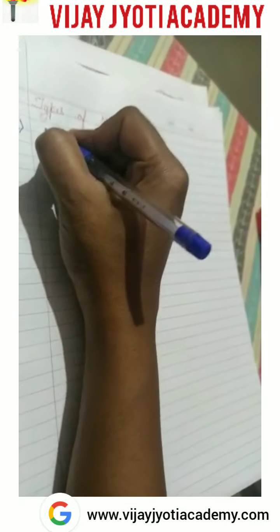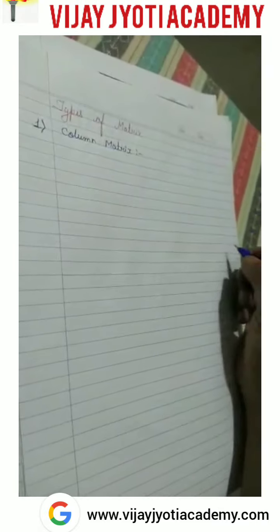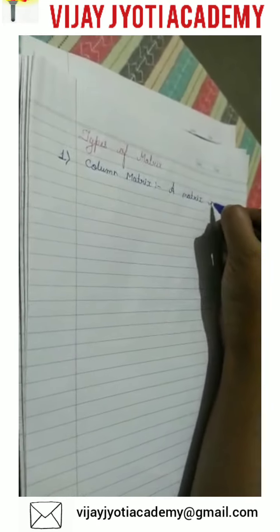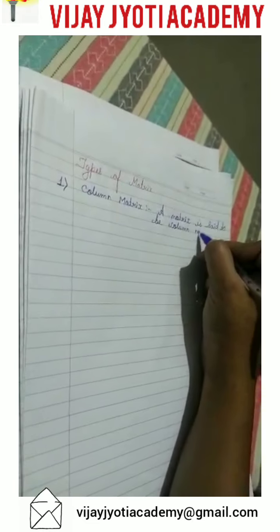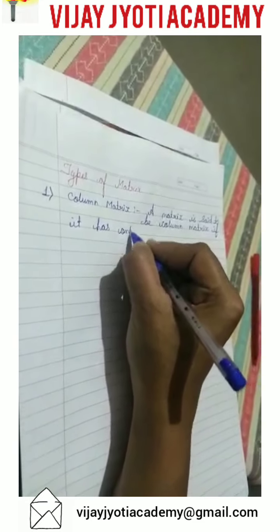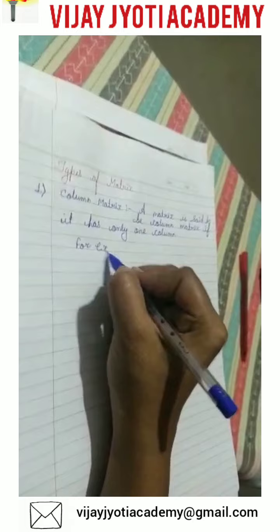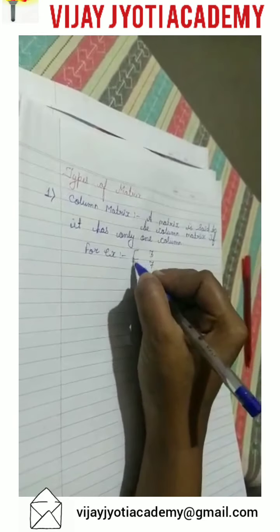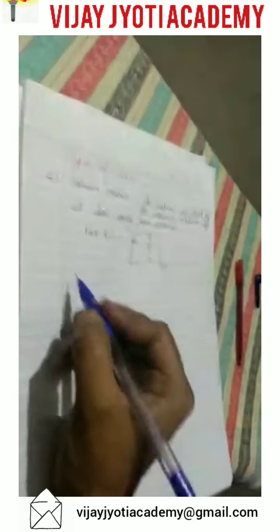First is column matrix. A matrix is said to be a column matrix if it has only one column. For example, the matrix with elements 3, 7, minus 9 — this is 3 by 1, meaning 3 is the number of rows and 1 is the number of columns.